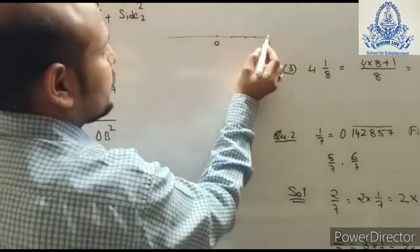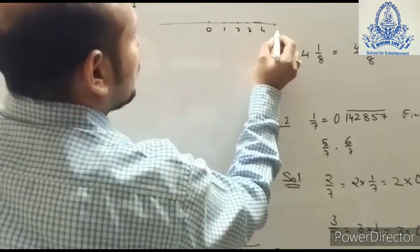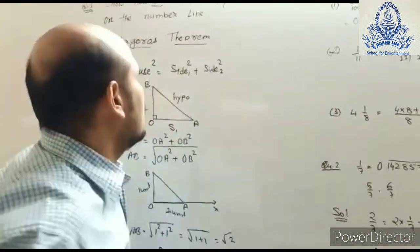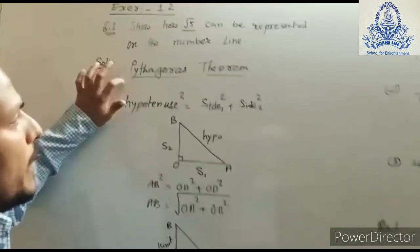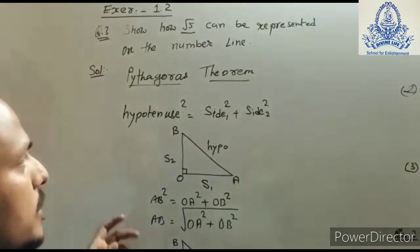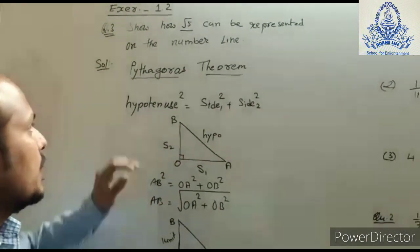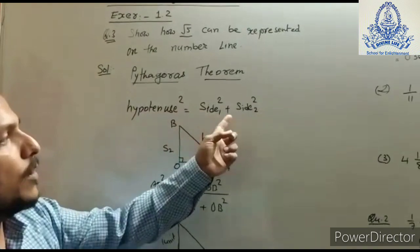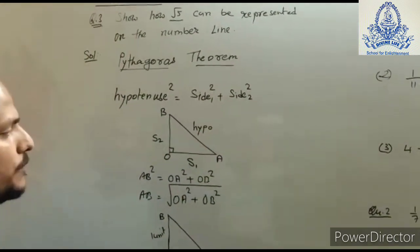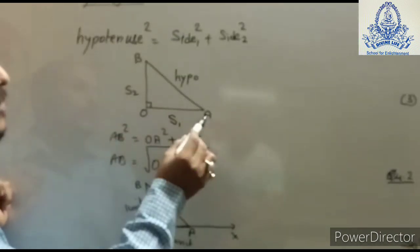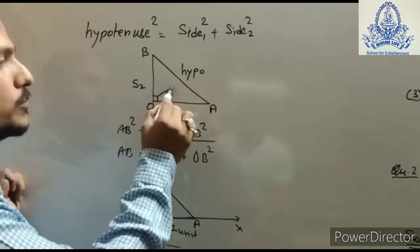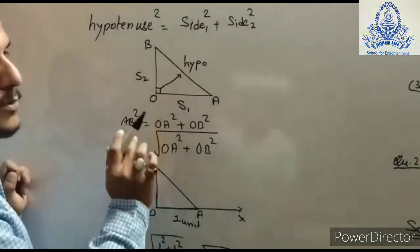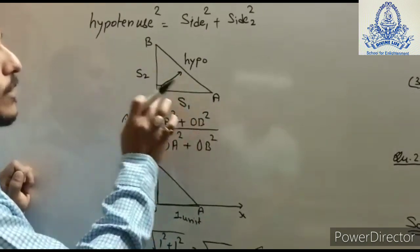You can easily show the number 5 on a number line, but how do you show root 5? For that, you need to remember Pythagoras theorem — which is not new, as you already learned it in 8th standard. In a right angle triangle OAB, right-angled at O, the hypotenuse is the side opposite the right angle, and the other two sides are the base and altitude.